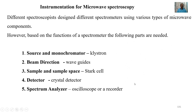Based on the functions of a spectrometer, the following parts are needed: source and monochromator — here a klystron is used; beam direction, which is nothing but waveguides; sample and sample space — here the Stark cell is used; detector — here the detector is a crystal detector; and spectrum analyzer — here an oscilloscope or a recorder is used.